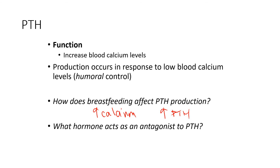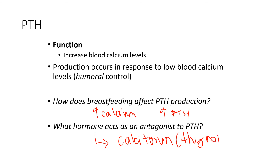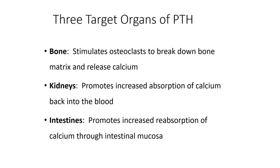The hormone that acts as an antagonist to PTH is in fact calcitonin, produced by the thyroid gland sitting nearby. There are three target organs of PTH: you can get calcium from bone, you can pull calcium back into the bloodstream from forming urine at your kidneys, and you can also get calcium from foods being passed through your intestines. So the three target organs of parathyroid hormone are bones, kidneys, and intestines.